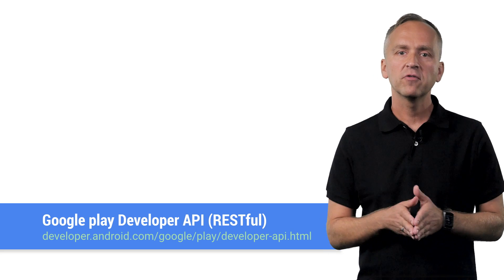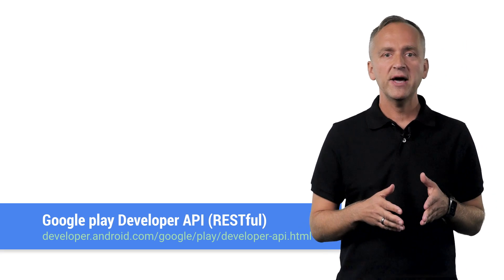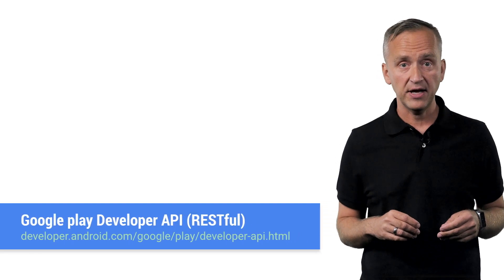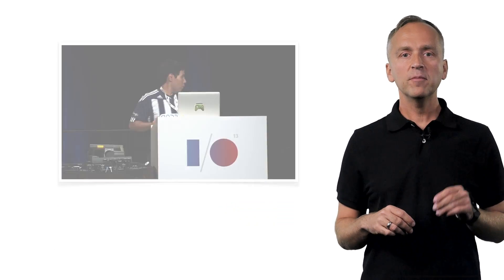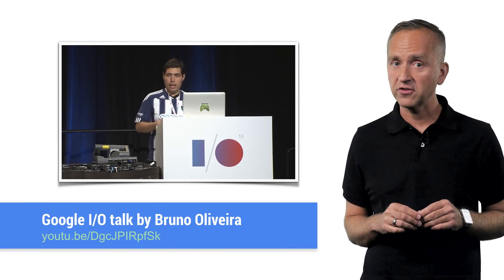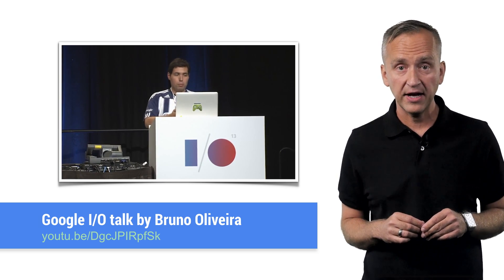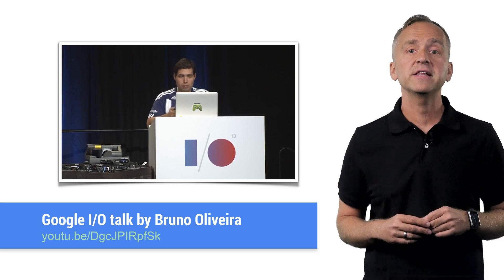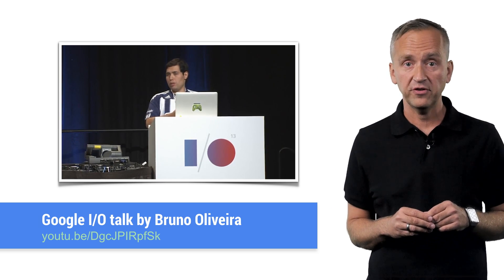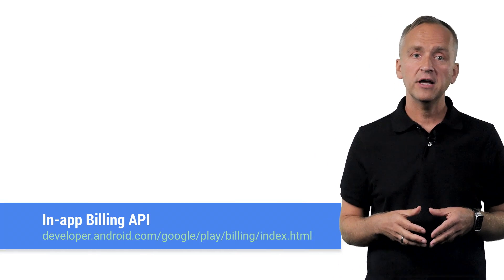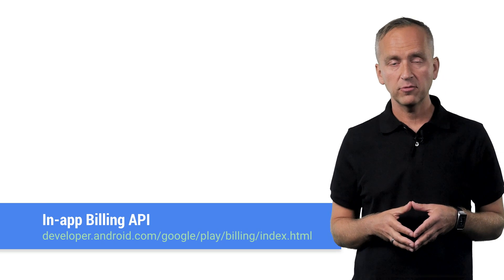There's a lot more to the purchase flow that we did not cover. For example, handling refunds and managing your digital products programmatically using the Google Play Developer API. What's even more important is securing transactions. You can use several techniques enabled by the Google Play in-app billing API to prevent bad actors from spoofing in-app purchases. Check out this Google I/O talk by Bruno Oliveira. To learn more about Google Play in-app billing API, visit our documentation.